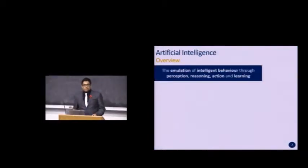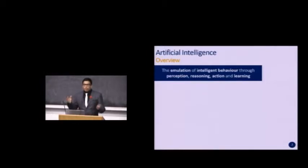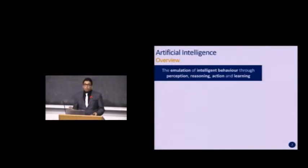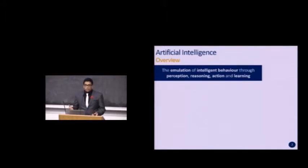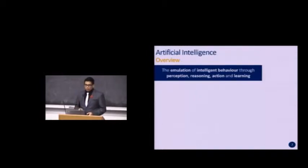So what is artificial intelligence? The scientific term is the emulation of intelligent behavior through perception, reasoning, action, and learning. Combining all four concepts together, the purpose of AI is to automate intelligent tasks that humans would normally perform — for example, automating things like turning on and off your light switch as you walk into a room. There are two different branches of AI.